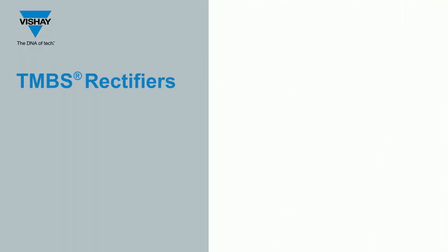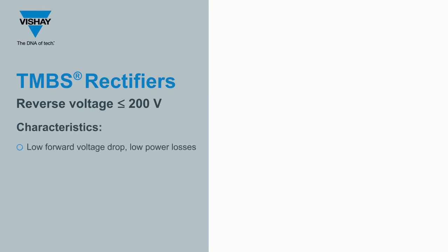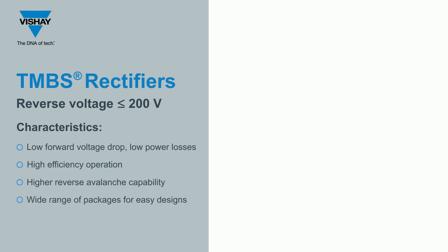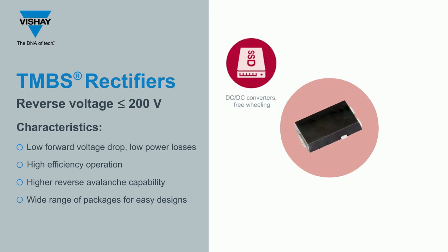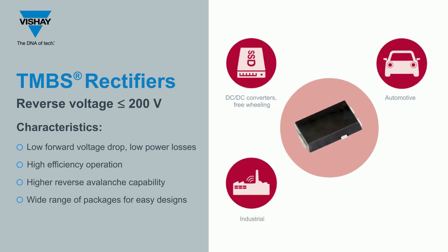With reverse voltages of less than or equal to 200 volts, TMBS Schottky rectifiers offer low forward voltage drop, low power losses, high efficiency operation, high reverse avalanche capability and a wide range of packages for easy designs. The diodes are suitable for low voltage applications such as DC-DC converters and automotive electronic control units, in addition to other industrial applications.